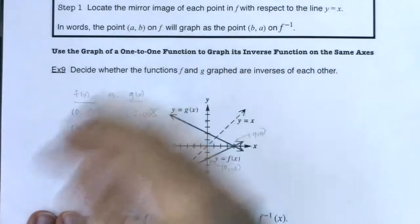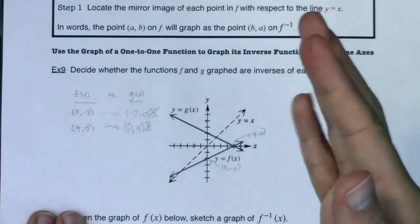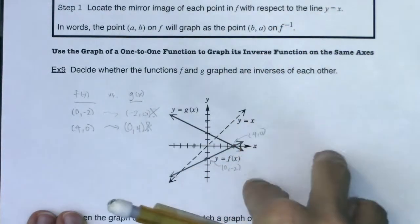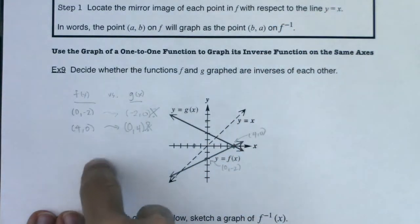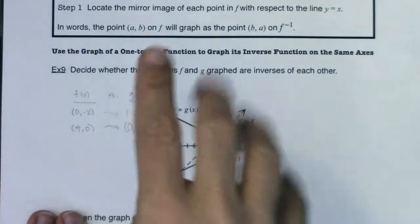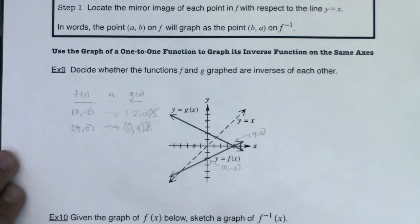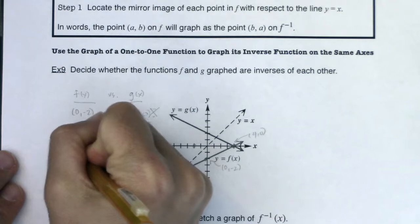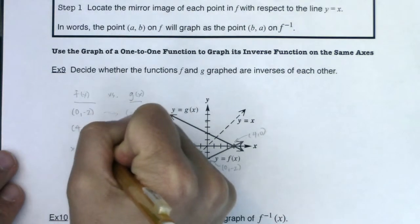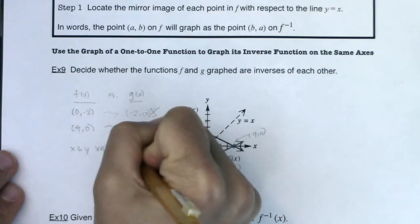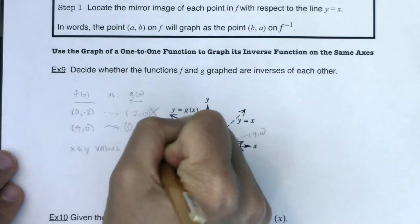So because it's not, that's yet another indication that these functions are not inverses of one another. So the x and y values are not switching places. That's a problem. So take note, x and y values are not switching places.